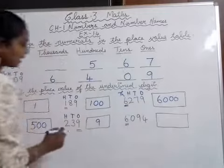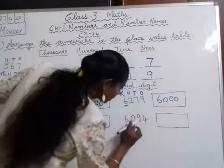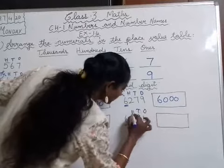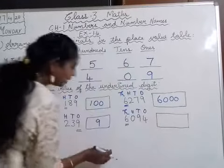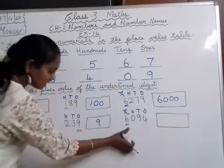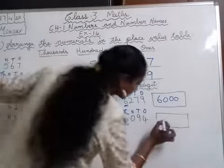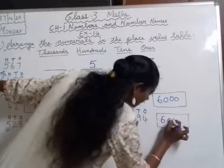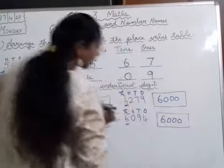For 6094, writing ones, tens, hundreds, thousands: the underlined digit is 6, which is in thousands place, so the place value of 6 is 6000.